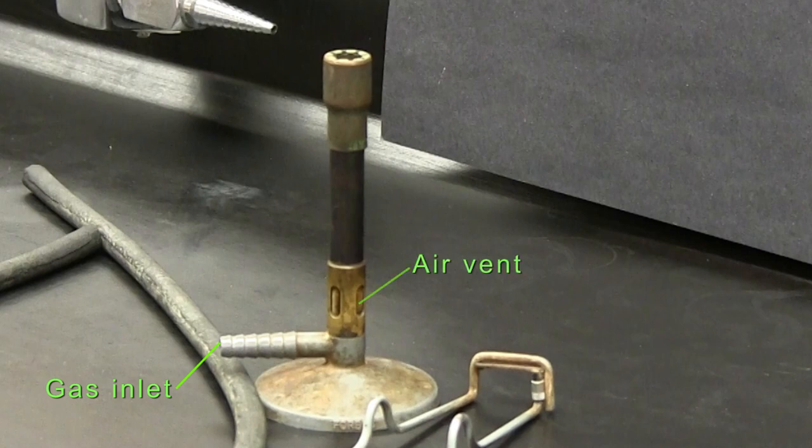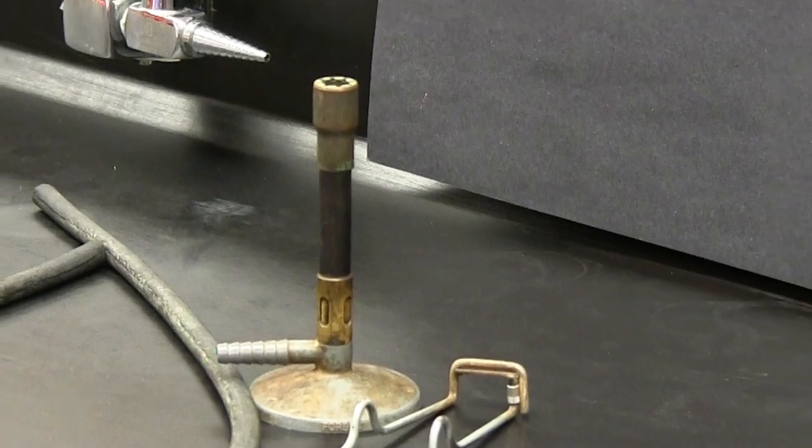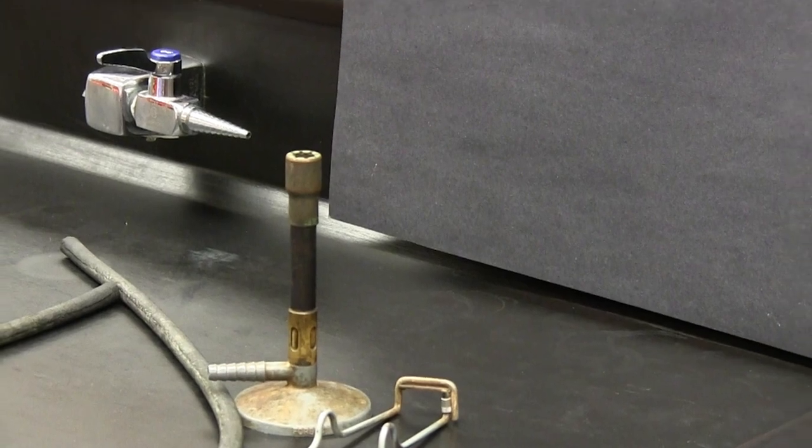The air vent at the bottom of the burner can be used to control the temperature of the flame. It's much easier to ignite the gas when the air vent is closed, so do make sure it's closed before starting.